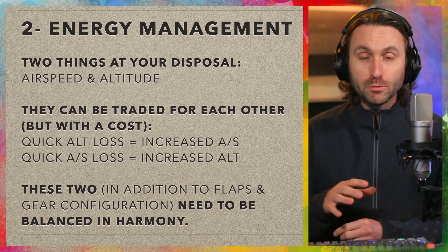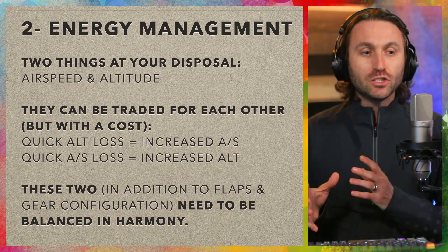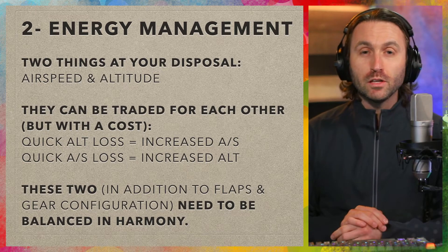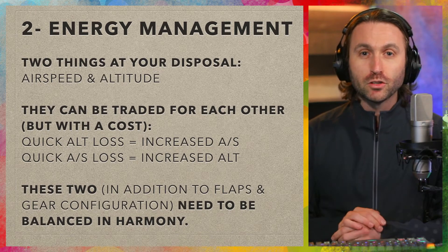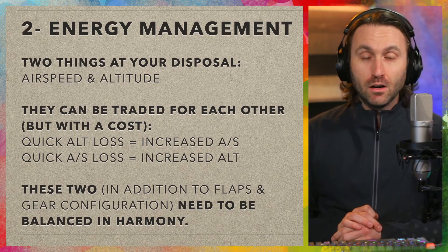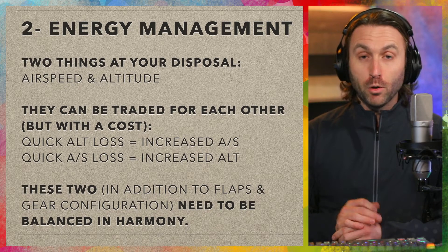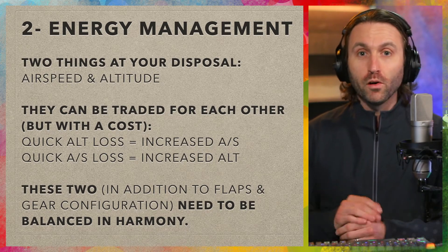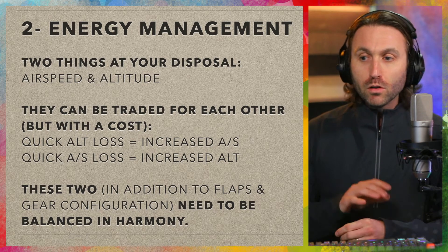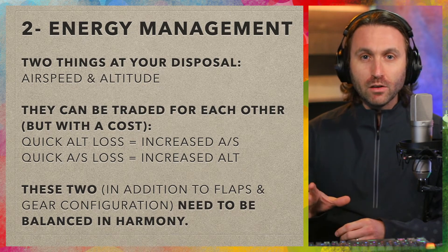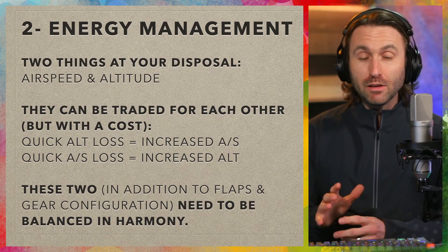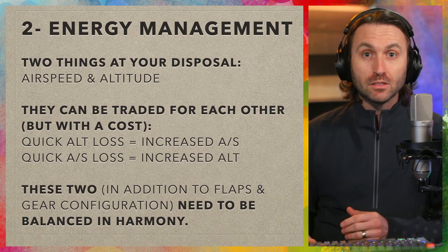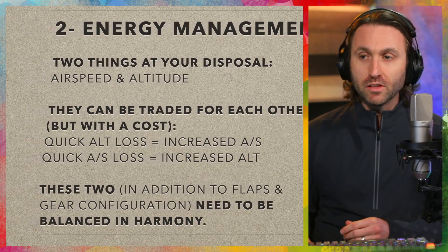Airspeed and altitude, in addition to your gear and flap settings, can also help slow you down. Remember, usually the first notch of flaps on a GA airplane helps with lift, and the next notches — one, two, or three more — help with drag. All of those things can add into slowing you down and getting you down safer, but all of these need to be balanced in harmony.